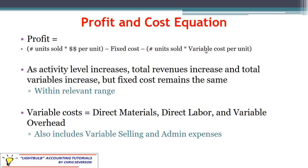A cost is either fixed or variable. As activity levels increase, total revenues should increase as well — selling more units at the same sales price per unit increases total revenues. Total variable costs should increase for the same reason: increasing number of units multiplied by the same variable cost per unit. But within the relevant range and within our capacity, fixed costs in total should remain the same. The fact that one cost stays the same while the other changes is what gives rise to CVP analysis and why we need it to analyze different activity levels.